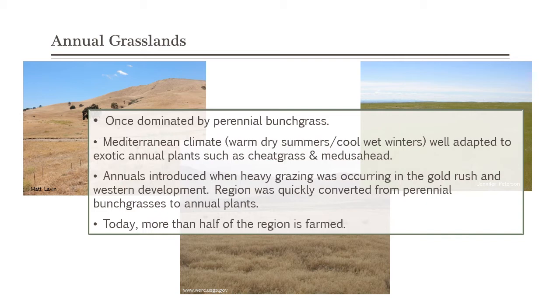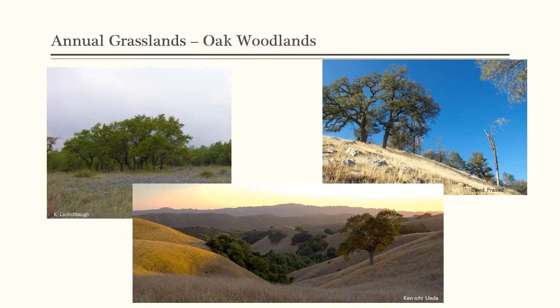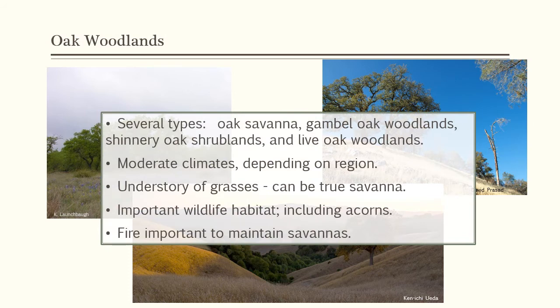Today those soils in the Central Valley of California are quite good, and more than half of that region is farmed. On the edges of the annual grasslands, where the country gets steeper and more hilly, it is ringed by oak woodlands. Several pictures show types from California and Texas — the left-hand side is live oak from Texas, but all have that savanna-type characteristic: tall trees with an understory of herbaceous plants. Several oak types include gambel oak, shinnery oak, live oak, and blue oak.